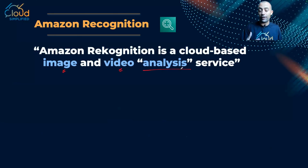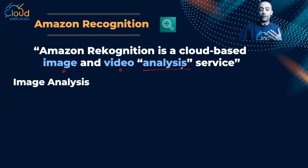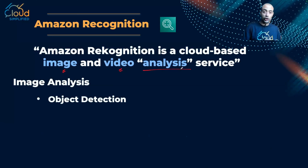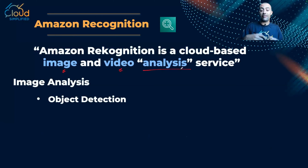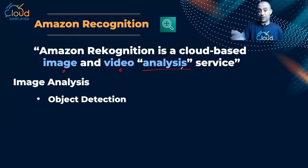Let me give you some of the use cases. If we are talking about image analysis, I can use Rekognition for object detection. For example, I can upload an image and Rekognition is going to detect what exactly is inside — for example cars, bikes, pedestrians, buildings. Rekognition can help me detect what objects are inside an image.